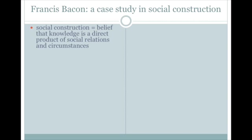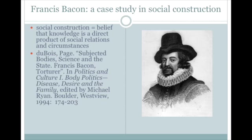Social construction, as it emerged in the 1970s, put forward the idea that knowledge was a direct product of social relations and circumstances. And we can see this in the essay that Paige Dubois wrote about Francis Bacon, emotively entitled 'Subjected Bodies, Science and the State: Francis Bacon Torturer.' Yes, it pretty much says what it's going to do in the title.